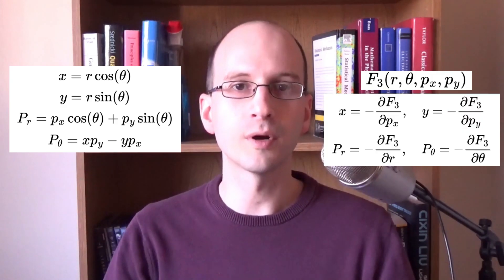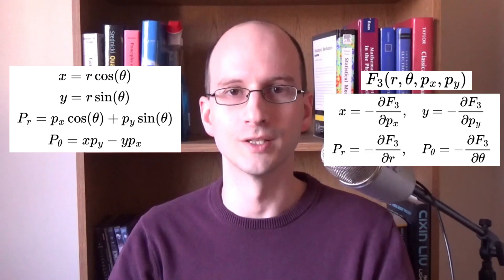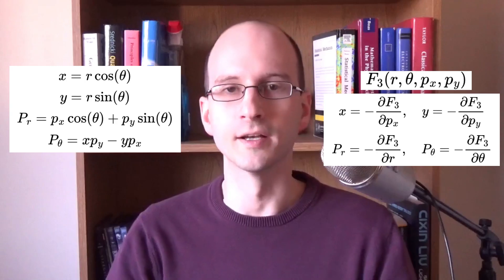We'll use the polar coordinate transformations to find the generating function. We'll use the generating function that has the opposite of these variables, in this case F3, with R, theta, Px, and Py. Here are the four partial derivatives to solve for our generating function. We substitute our transformation equation into these. Let's do it one at a time.